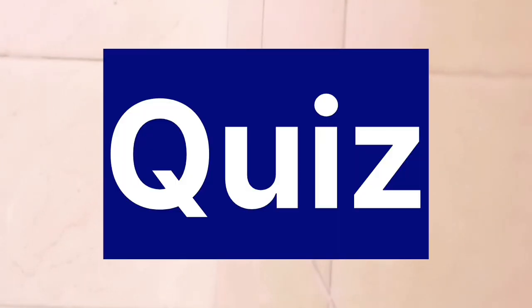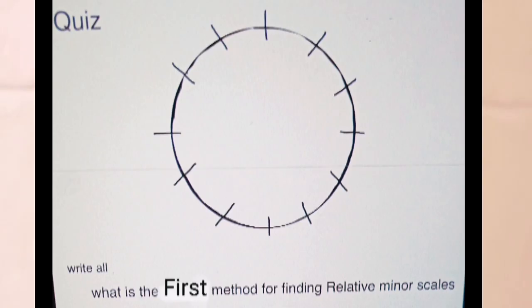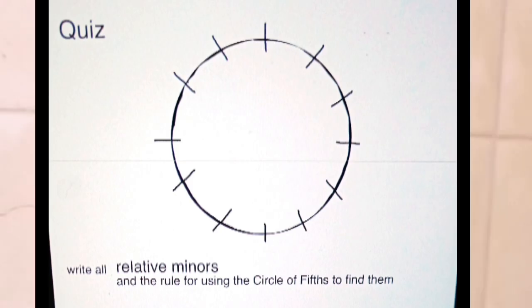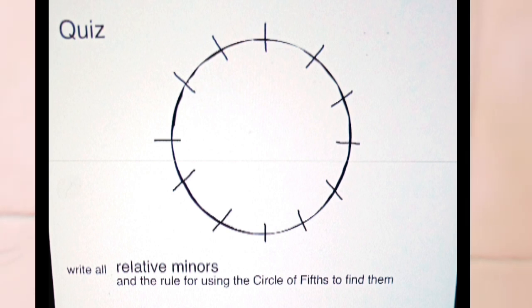It's time for a quiz. I've written out a sample of the circle of fifths and I would like for you to write the relative minor scales. You can screenshot it or write it on a separate sheet of paper. Use the circle of fifths to find the relative minors. Remember: minors on the inside, majors on the outside. The left side is for flats, the right side is for sharps.